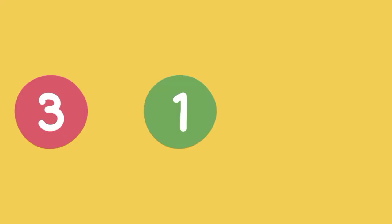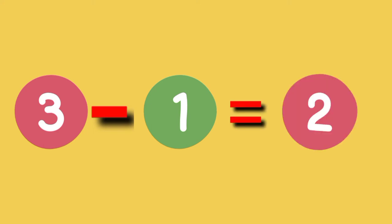There are three birds on the branch of the tree. One flies away. So we shall subtract one from three. And the answer is two. Three minus one equals two. That is a subtraction sentence.